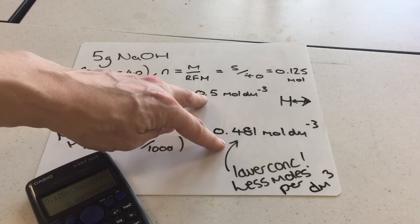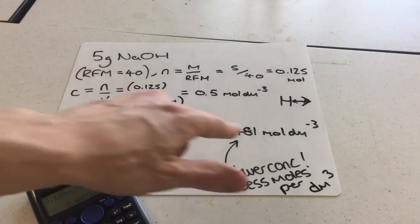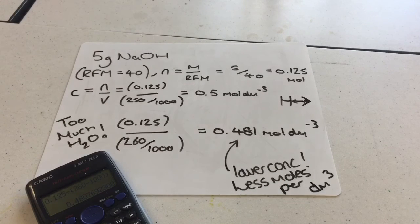And you also need to be aware that if you add too much deionised water, you create a less concentrated solution, and therefore in a titration, you're going to get a smaller average titre of the other reagent than you were expecting.